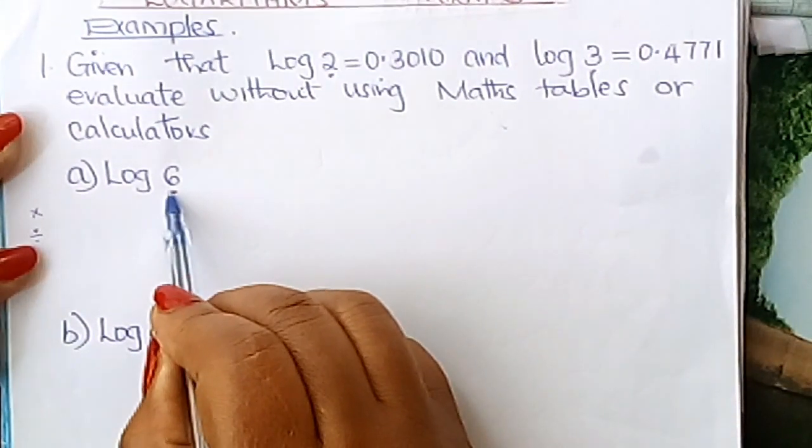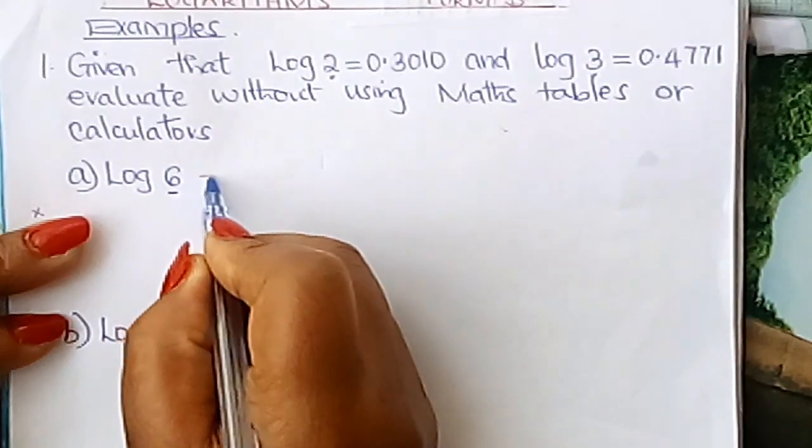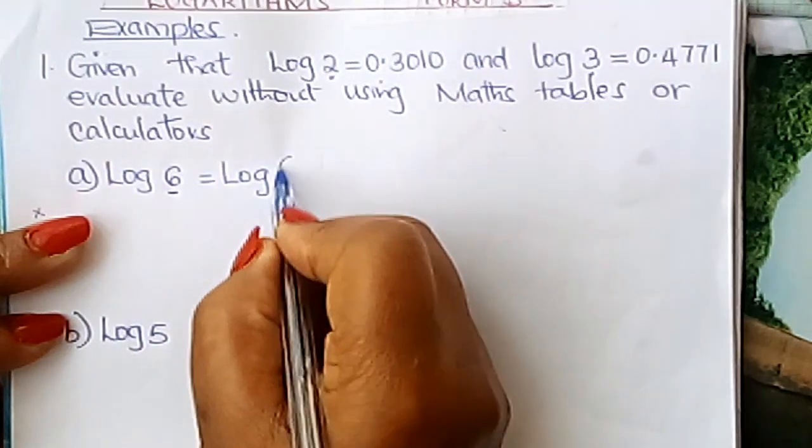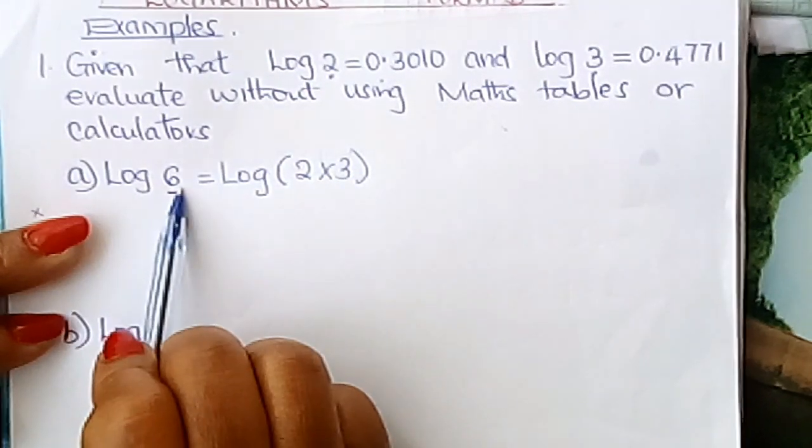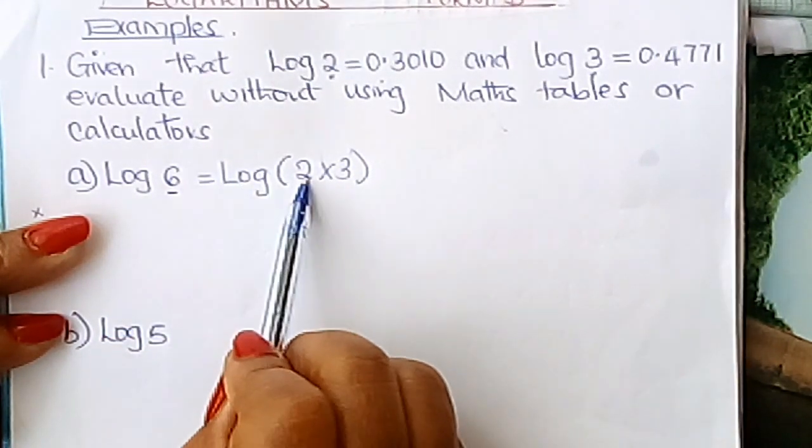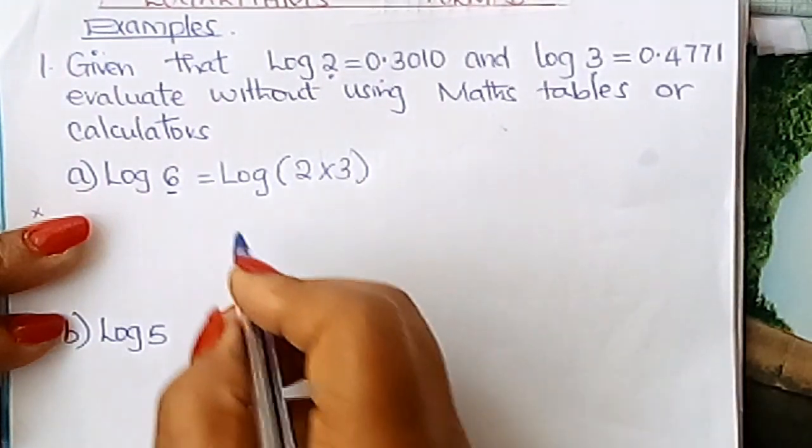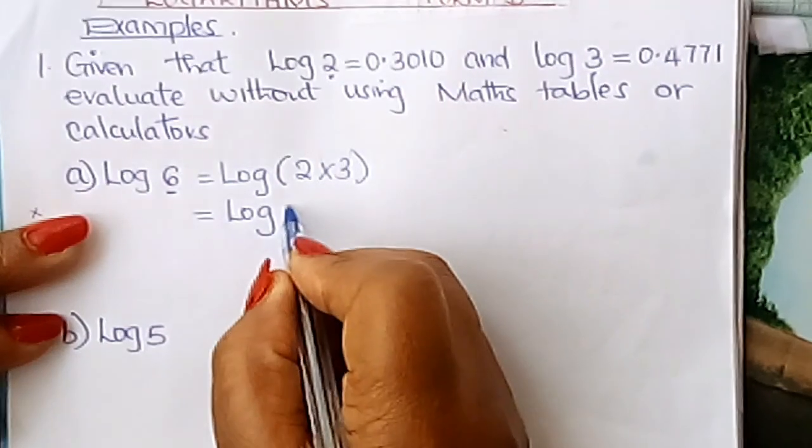6, how do you express 6 in terms of 2 and 3? You multiply. So this is the same as log, log in brackets 2 times 3. Log 6 is the same as log 2 times 3. From there learner, we go to the next step and write, this is the same as log 2. If this is multiplication, it means we add log 3.